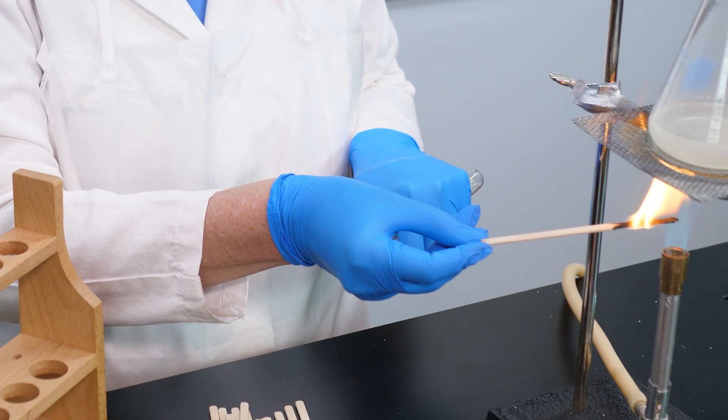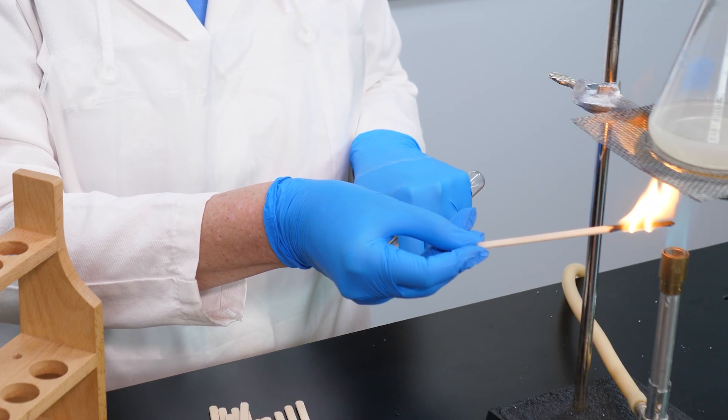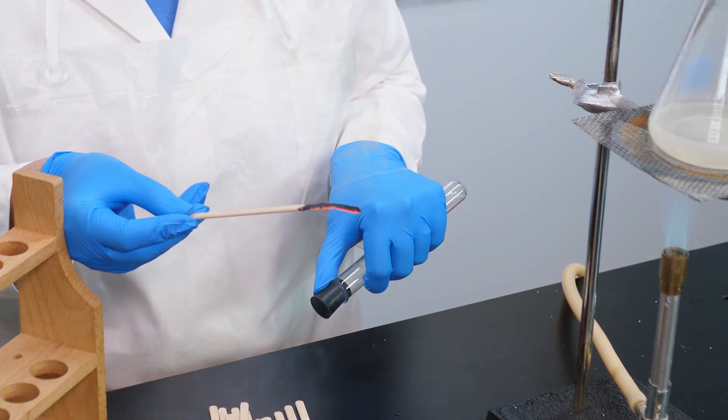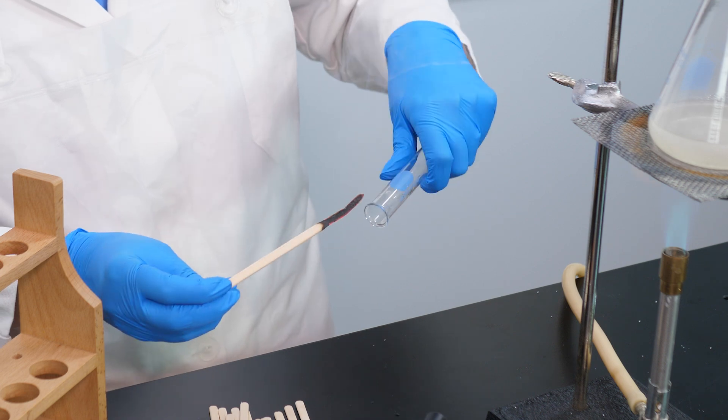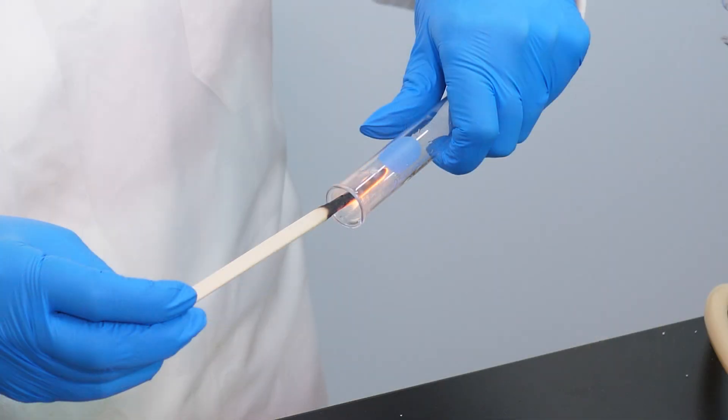We can test the oxidizing ability of oxygen with a wood splint. However, this time, we blow out the flame before we insert it into the tube. When we insert the glowing splint into the oxygen-rich atmosphere inside the tube, the flame is rekindled.